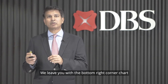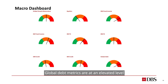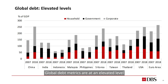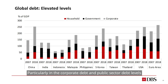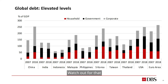We leave you with the bottom right corner chart, which in our view is the most important one. Global debt metrics are at an elevated level, particularly in corporate debt and public sector debt. Combined with high asset valuations, you do have a rather potent mix for dislocation. Watch out for that.